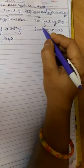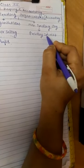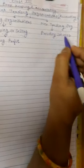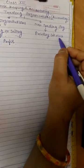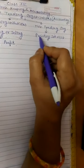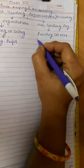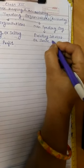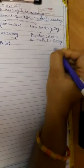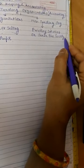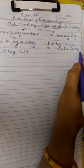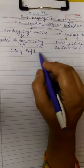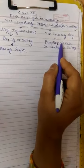Non-trading organizations are those organizations the object of which is not to earn profit but to provide services to the society. In other words, we can say that these are the organizations which are related to serve the society or social services or fulfill the needs of the society by giving their services. This is the difference in trading and non-trading organization.